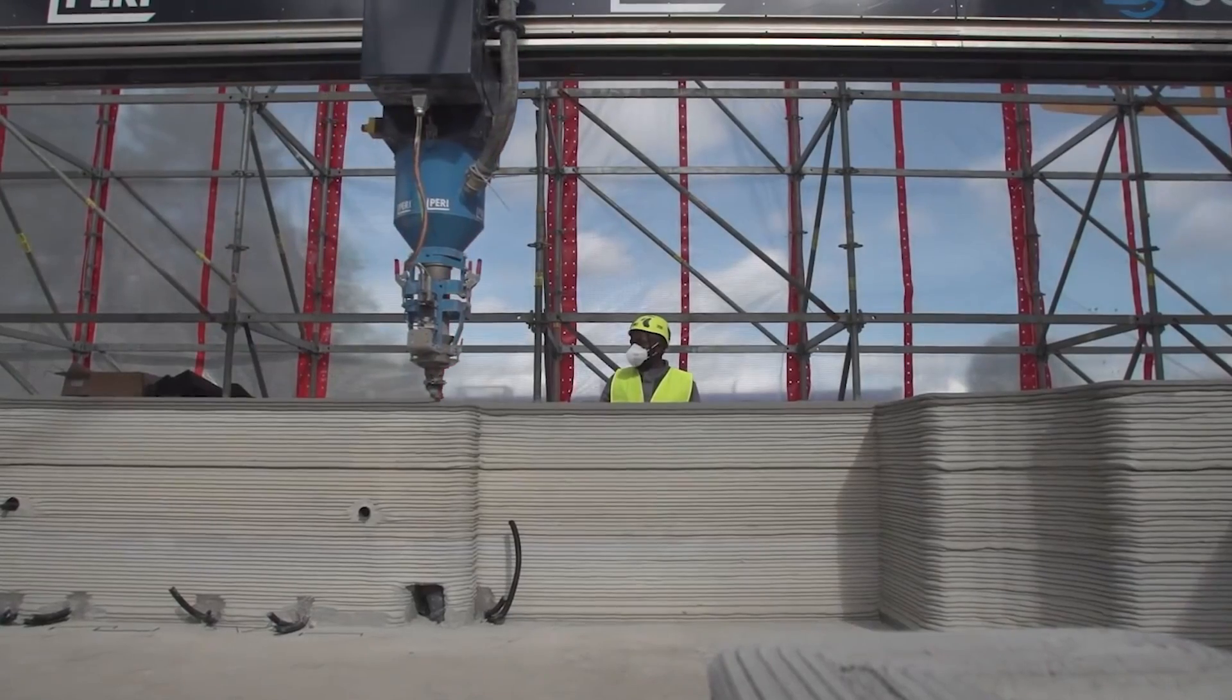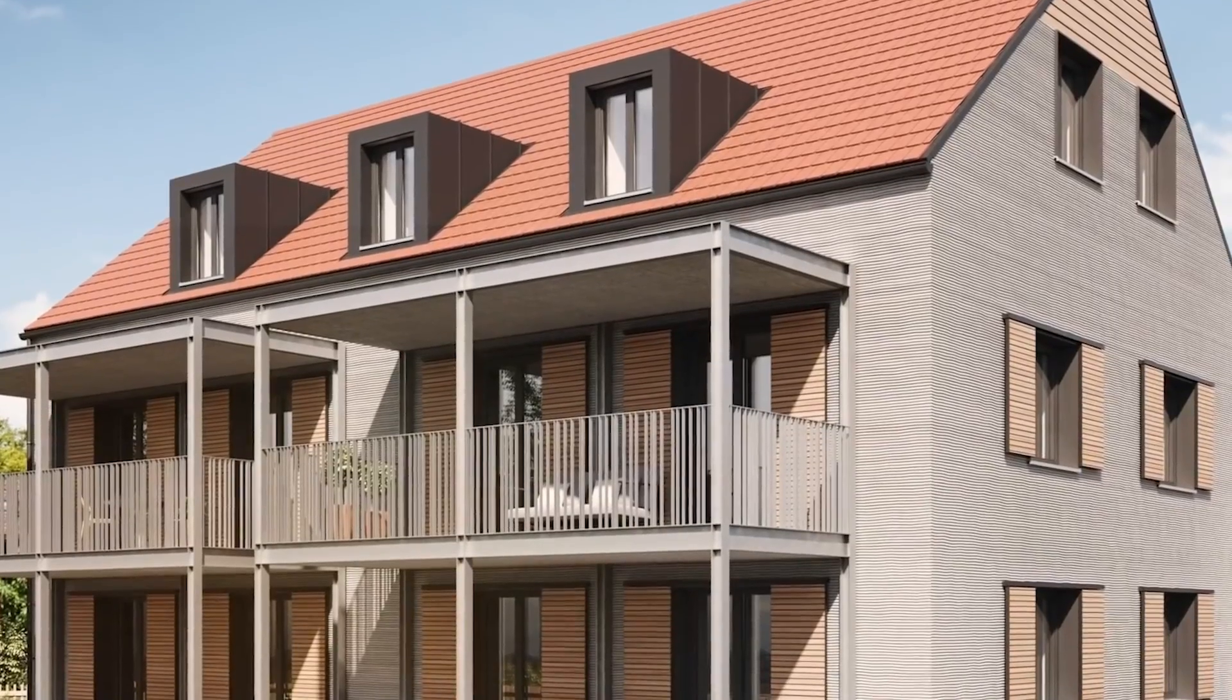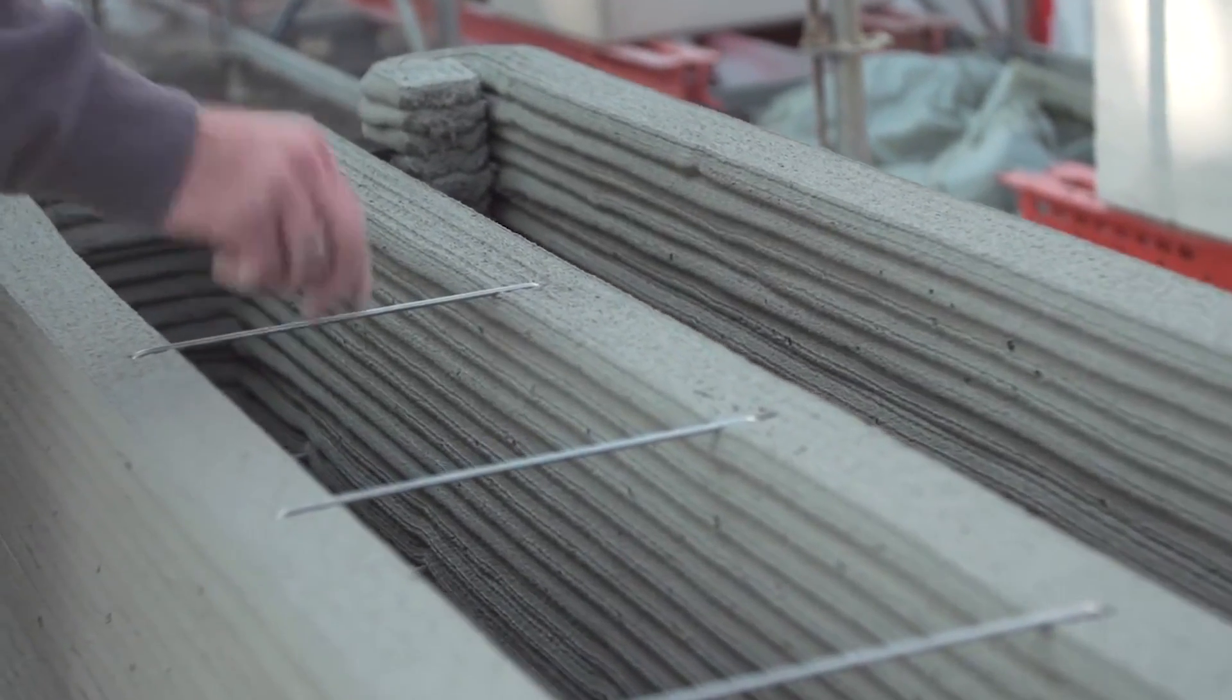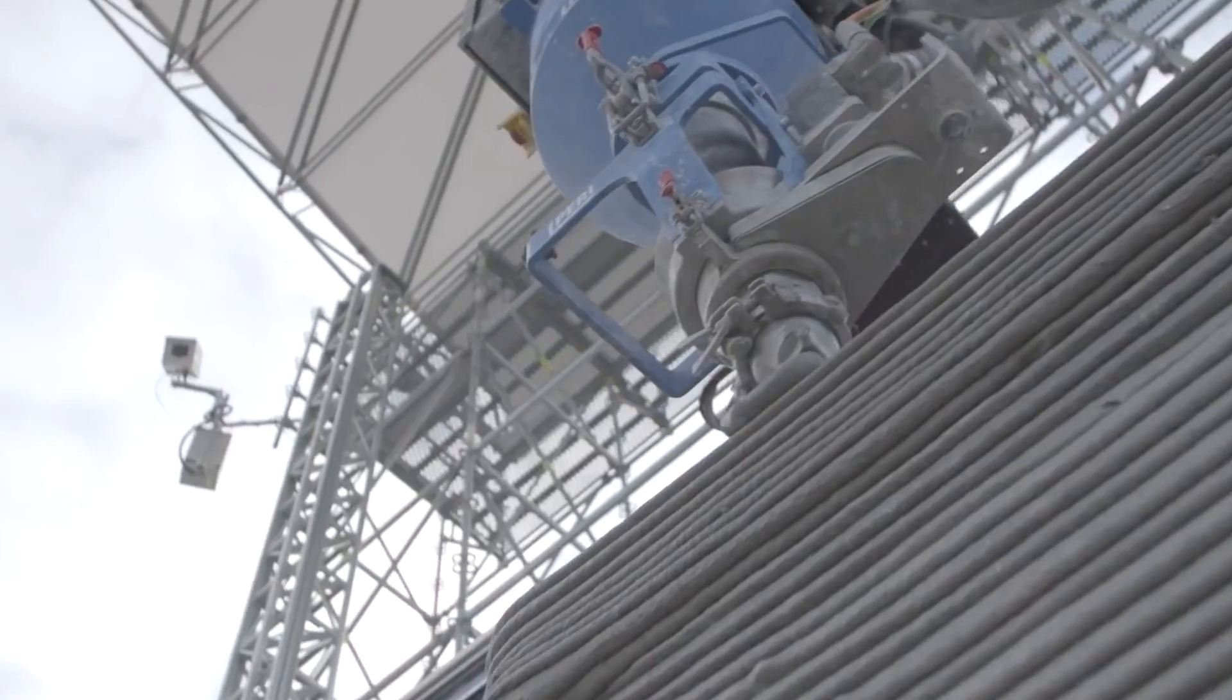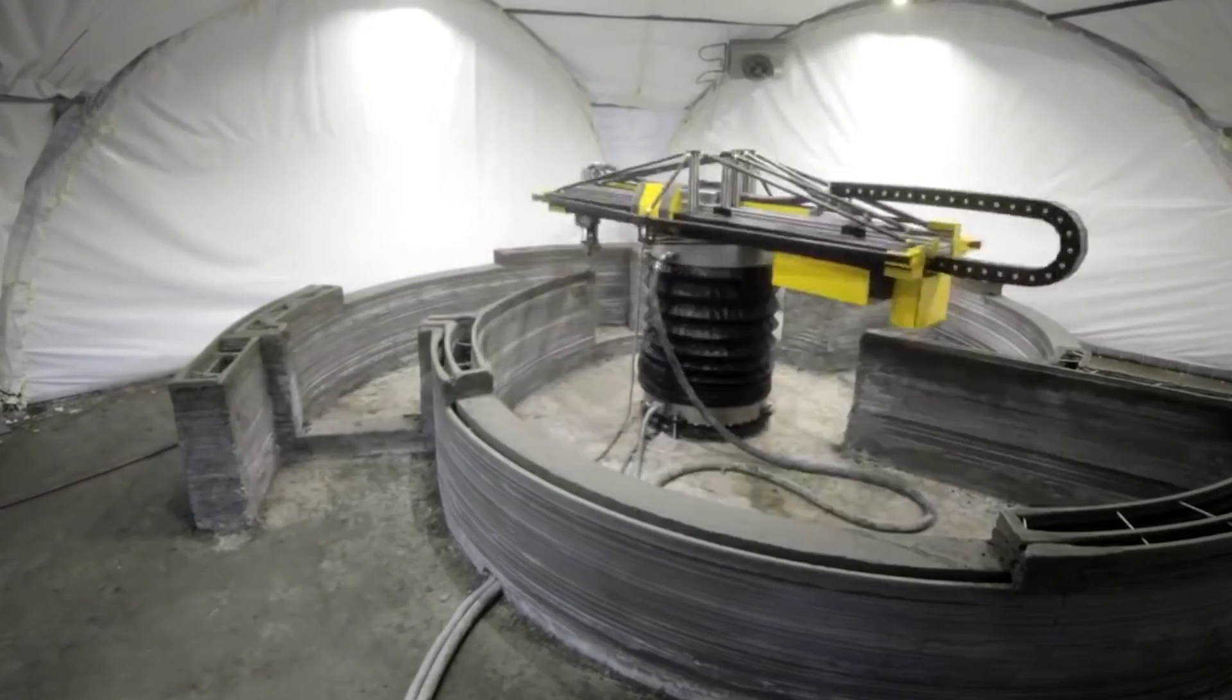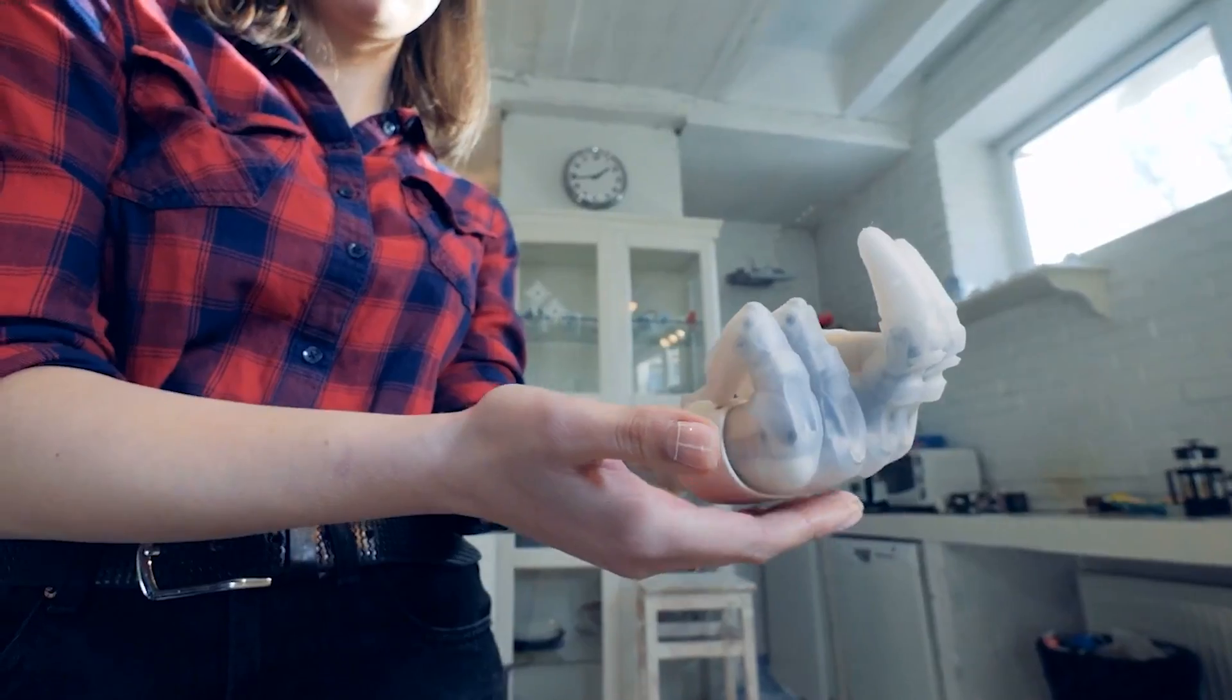3D printing is changing the medical field by making prosthetic limbs more affordable. This is especially important for people in war-torn areas who often don't have access to prosthetics. 3D printing is also advancing bioprinting, where human cells and tissues are used to create organs. We've already seen successful applications of 3D printing in repairing bones and cartilage. In fact, in 2014, surgeons used 3D printing to reconstruct a man's face after a car accident.